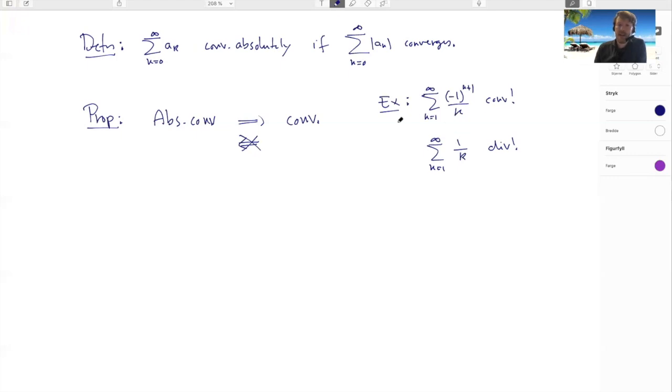And then we can say that any series that is such that it converges but it does not converge absolutely, we call them conditionally convergent. These are dangerous series. These are the ones that behave in weird ways and that we have to be really careful with.